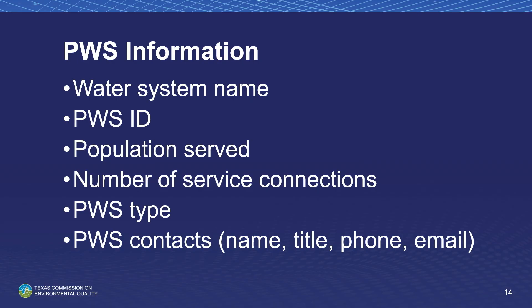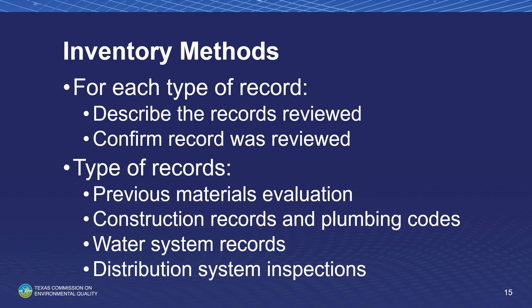For the next several slides, we'll discuss the required elements of the initial lead service line inventory. Whether you use form 20943 or the online LSLI portal, these elements are required. Required PWS information includes water system name, ID, population served, number of service connections, PWS type, and PWS contacts. Systems must certify they have reviewed all historical water system records and describe the records reviewed. Required record types include previous material evaluations, construction records and plumbing codes, other water system records, and distribution system inspections.